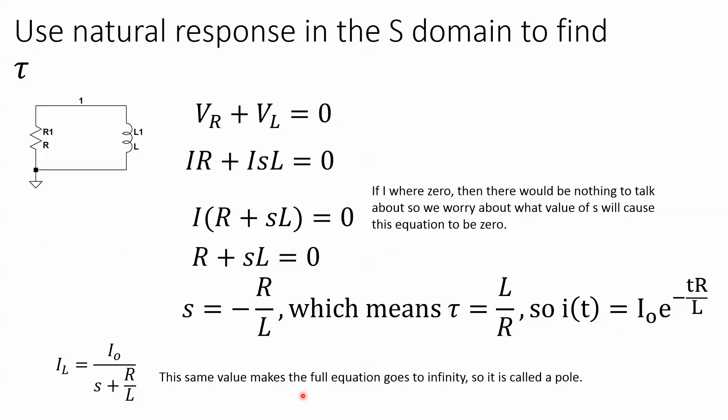Well an easy way to find that is actually go to the s domain and we just use a natural response. We sum up the voltages, put it in terms of current, have it set equal to zero, because we're going to find where this part of the polynomial goes to zero, because that's how you find the inverse Laplace transform. But we don't need to go through all those steps, we just need to find out where s equals zero.